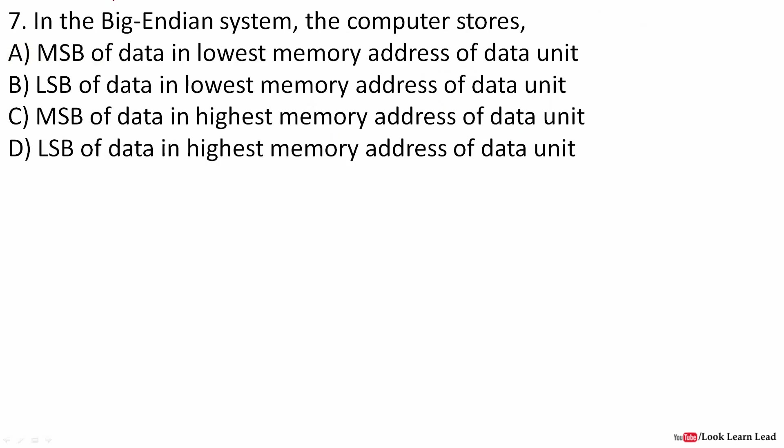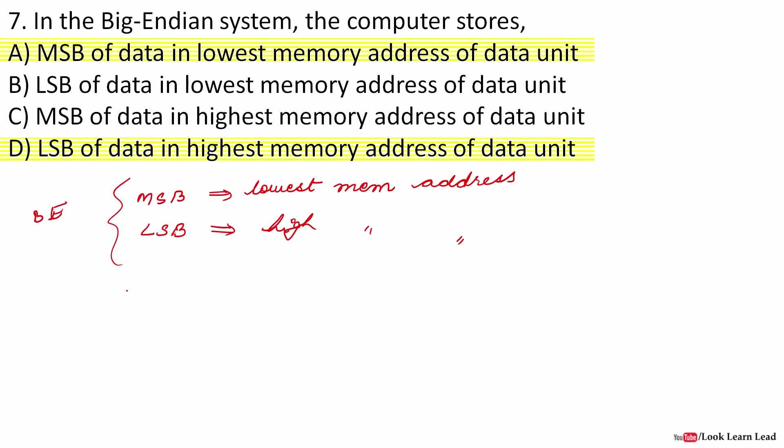In the big-endian system, the computer stores what? In the big-endian system, the MSB of the data is stored in the lowest memory address and the least significant bit of the data is stored in highest memory address. So the answer would be MSB of the data in the lowest memory address of the data unit and LSB of the data in the highest memory address of the data unit. There are two options given, so these questions may be left out for evaluation.